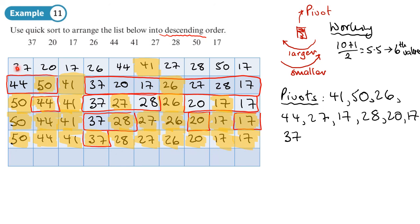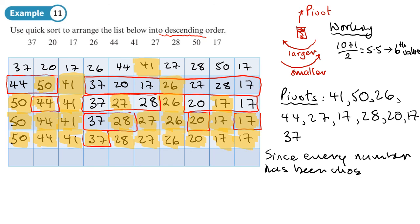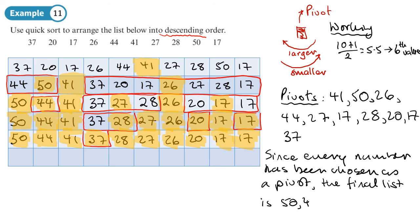Since every number has been chosen as a pivot, the final list in descending order is: 50, 44, 41, 37, 28, 27, 26, 20, 17, 17.